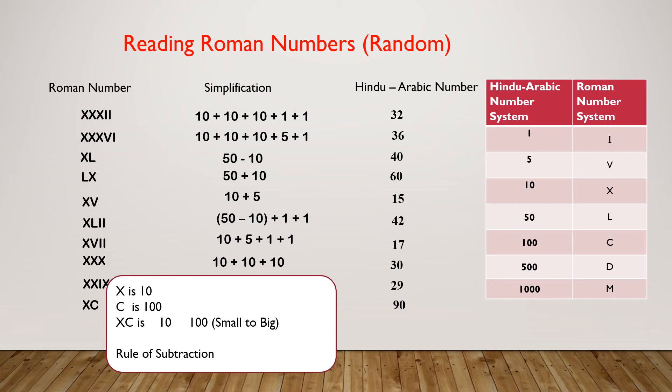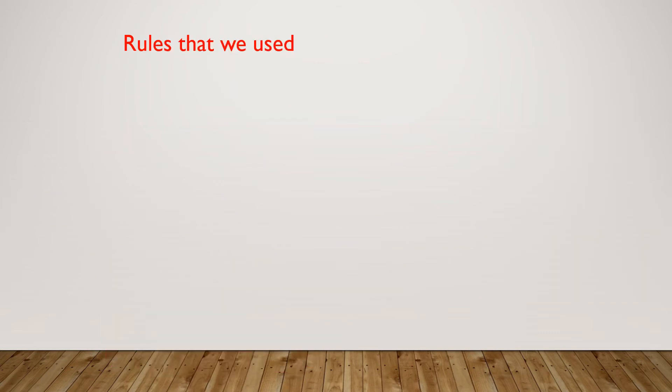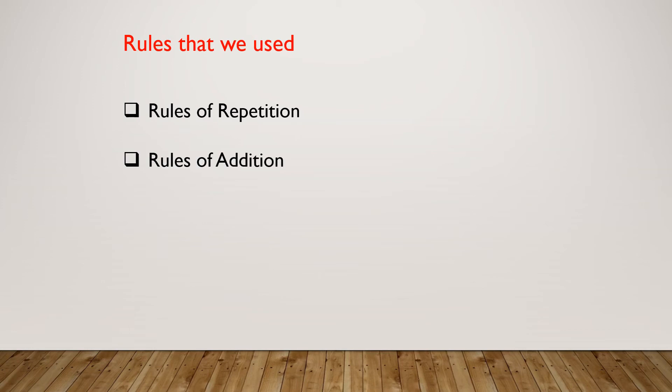I hope you understood how to read Roman numerals now. So the rules that we used are: rules of repetition, rules of addition, and rules of subtraction. I'll be explaining these rules in detail in my next video. Right now, let's do some revision by doing a quiz. Are you ready? Let's start.